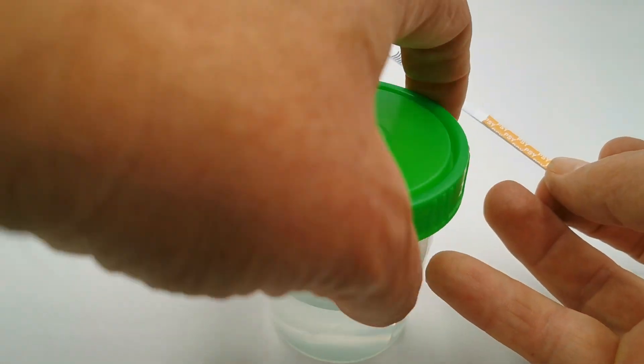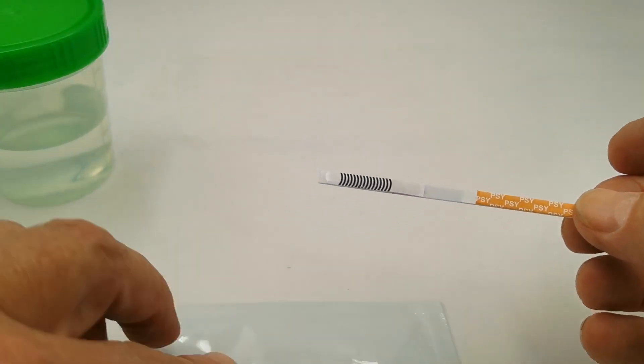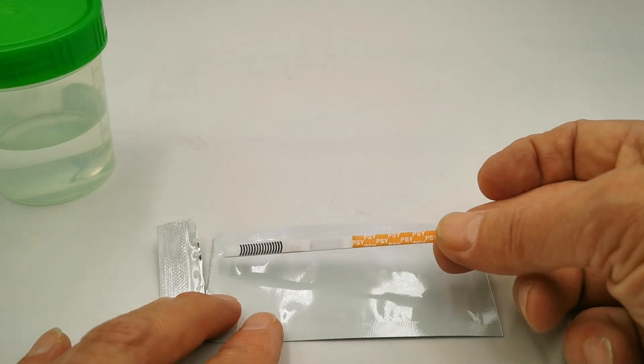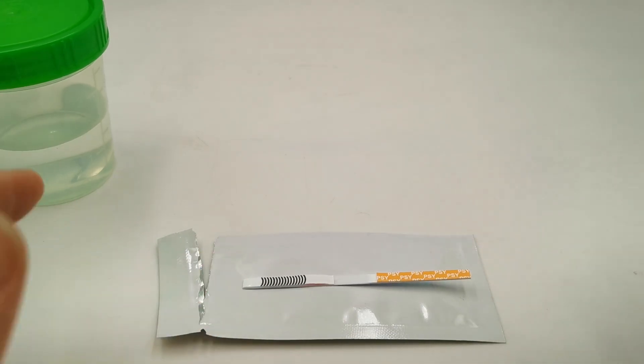Knock any excess sample off, remove the test strip from the sample and place it on a flat non-absorbent surface and start a timer to come back and read the test result at between 8 and 10 minutes.